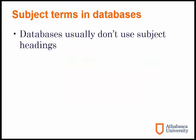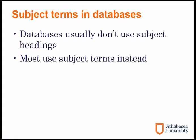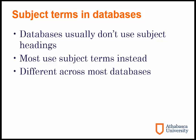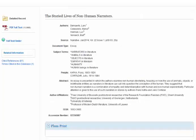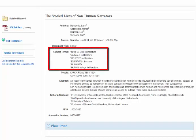Databases usually do not use subject headings. However, most databases have their own subject terms that were created by subject experts, and these subject terms usually differ from database to database. Some databases even have a thesaurus or subject terms list that you can use to easily carry out subject term searches. In most databases, you can find subject terms in an item's record, but they may be described differently across different databases.